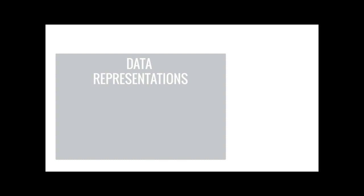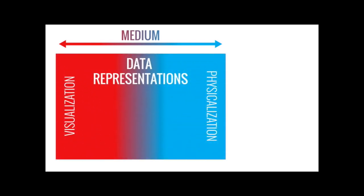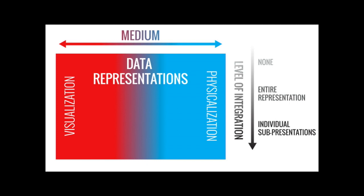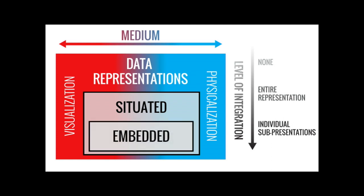Thinking this way allows us to draw up a taxonomy of different kinds of data representations, where at a high level we can think about representations as visualizations or physicalizations or somewhere in between. We can also think about the level of integration between those representations and the reference, all the way from non-situated visualizations through a subset that are situated and taken into the relevant space, and then a subset of those that are actually embedded, where individual reference have corresponding marks or small visualizations.